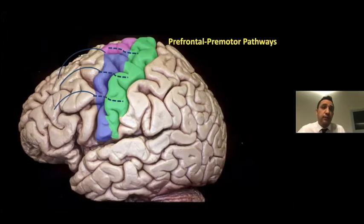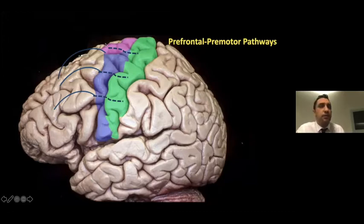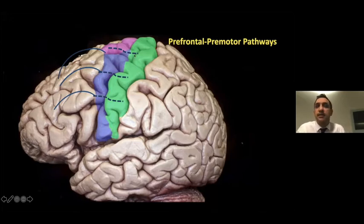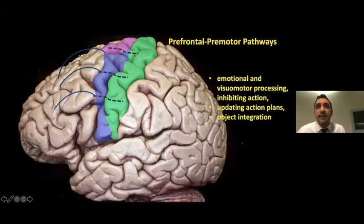The most anterior part of the premotor regions takes its main afferents from the prefrontal cortex, and these can also be called prefrontal-dependent premotor regions. These anterior prefrontal afferents project throughout the caudal premotor regions to the primary motor cortex. This system, known as the prefrontal-premotor pathway, plays a role in highly cognitive processes such as emotional and visuomotor processing, inhibitory action, updating action plans, and object integration.